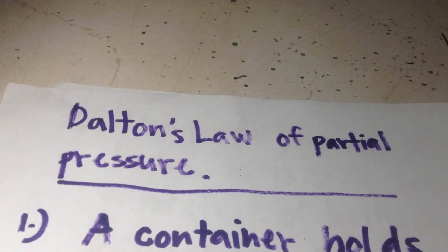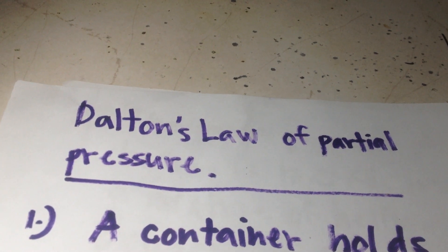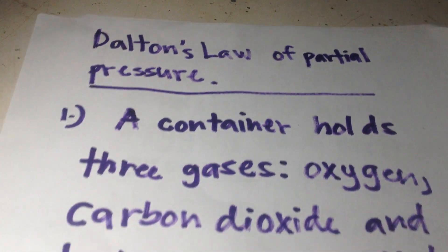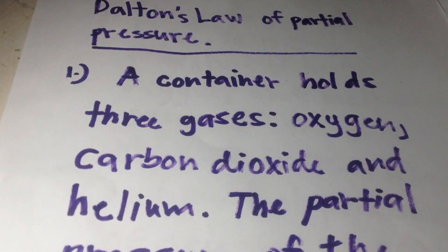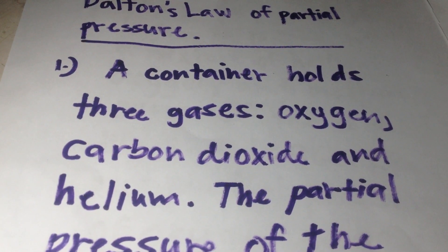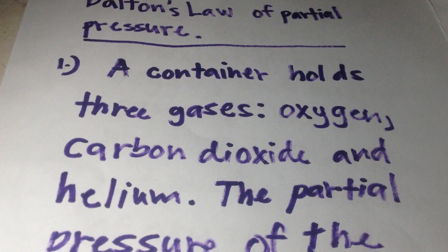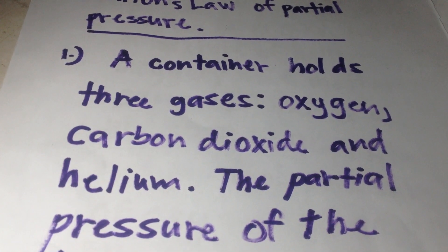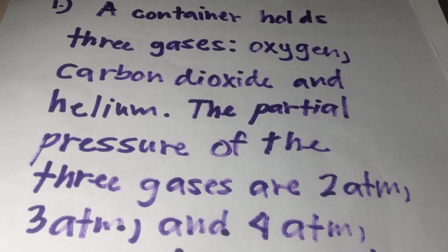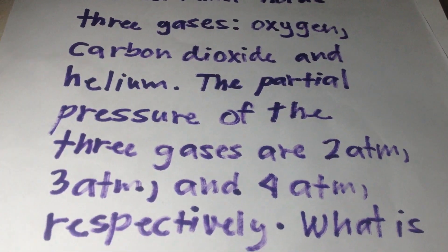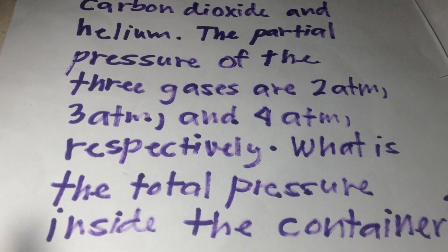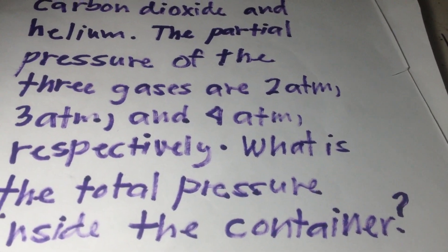Hello everyone, in this video we're going to solve Dalton's Law of Partial Pressure. Problem number one: a container holds three gases — oxygen, carbon dioxide, and helium. The partial pressures of the three gases are 2 atm, 3 atm, and 4 atm, respectively. What is the total pressure inside the container?